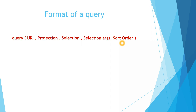ascending order or descending order, you can specify that as the sort order parameter. So we pass this query to the content provider and the result is returned back to your application through UI.